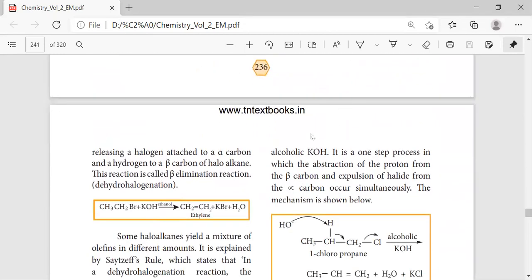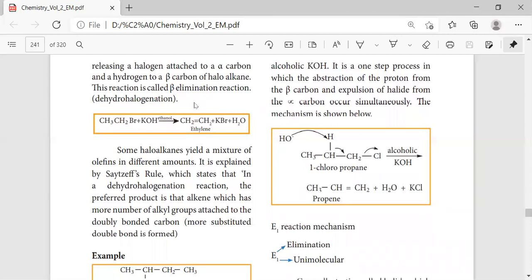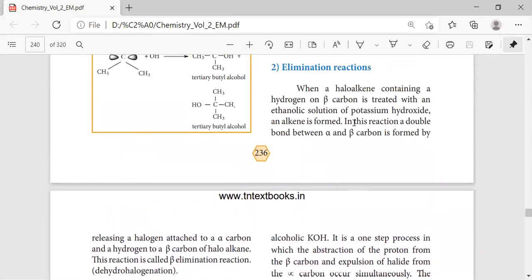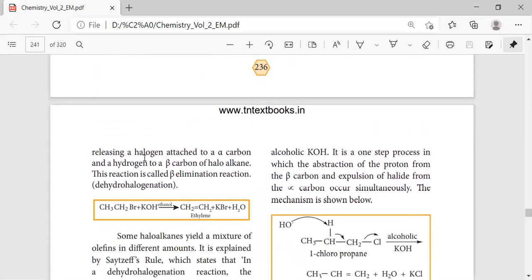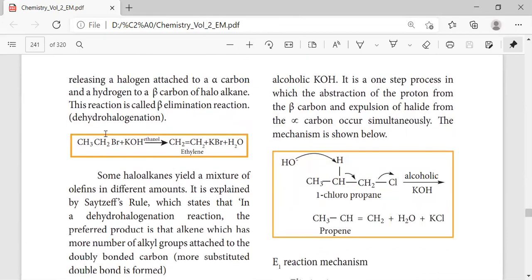Next comes elimination reaction. In elimination reaction, the double bond that is present between alpha and beta carbon is formed by releasing a halogen attached to the alpha carbon. Here you see the dehydrohalogenation reaction. First the HBr gets removed and we get one hydrogen removed, leading to the formation of a double bond.